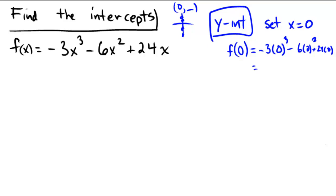There are a bunch of zeros here — zero cubed is zero, negative three times zero is zero, minus zero plus zero equals zero. So our y-intercept is located at (0, 0).